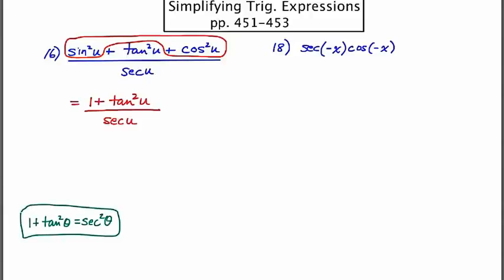So what I can do now is I can replace one plus tan squared with secant squared u over secant u, simplify, and the answer is just secant u.